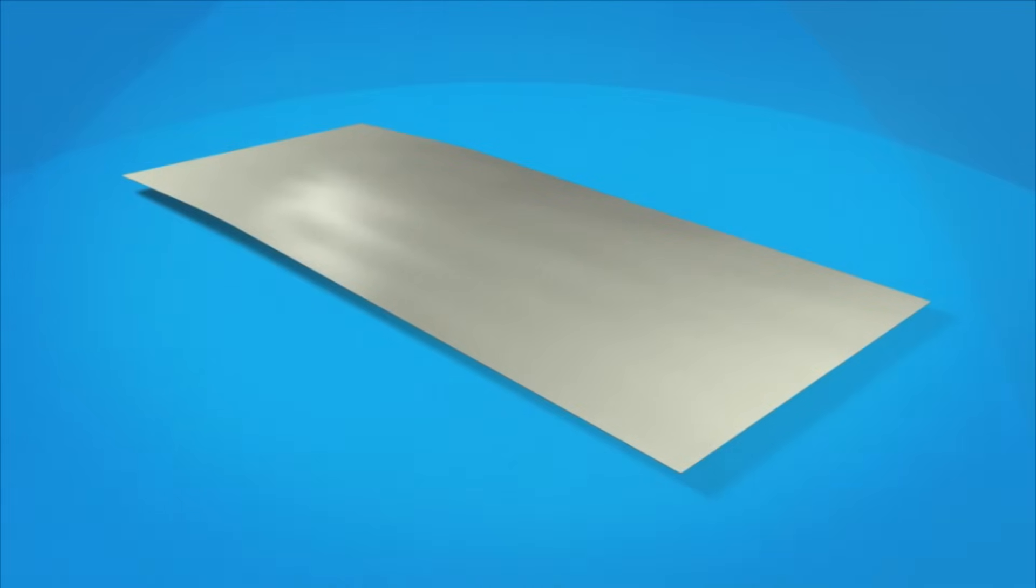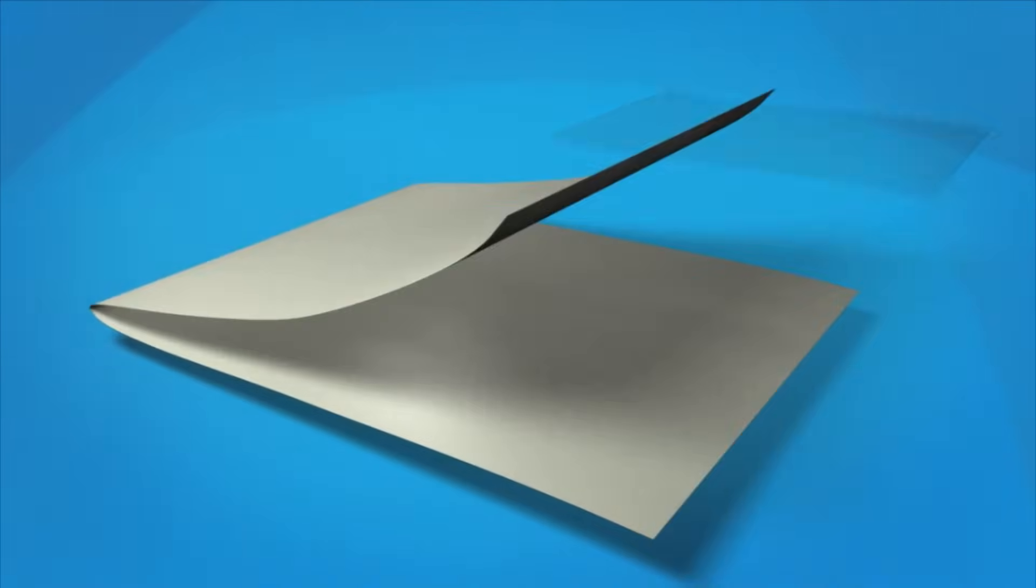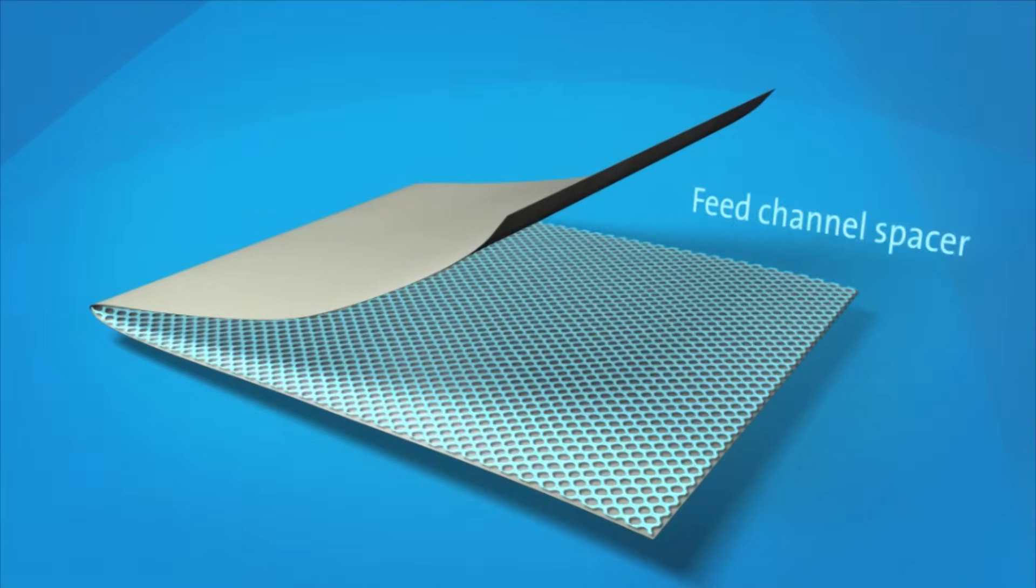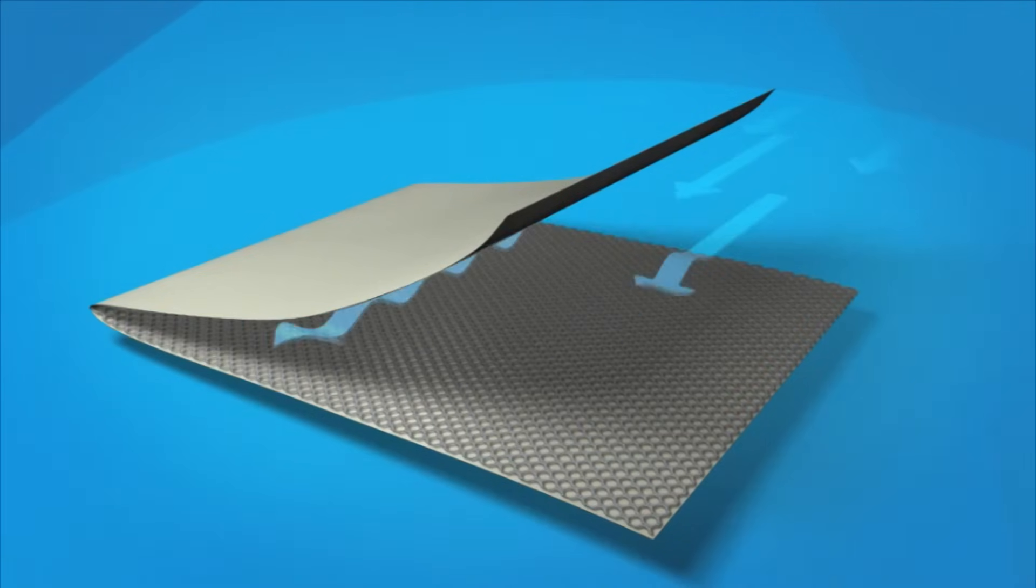The membrane flat sheet is combined with a sheet of feed channel spacer. This provides turbulence and creates space between the membrane sheets for the feed water.